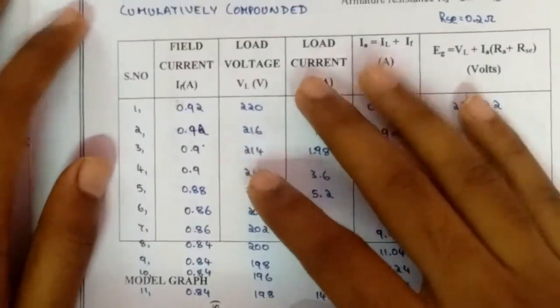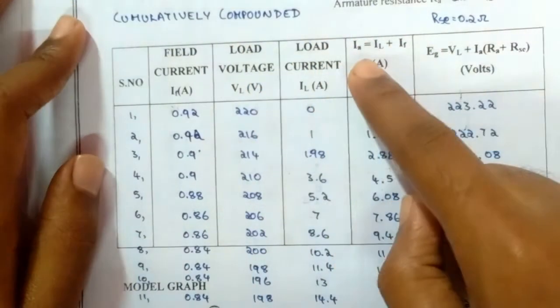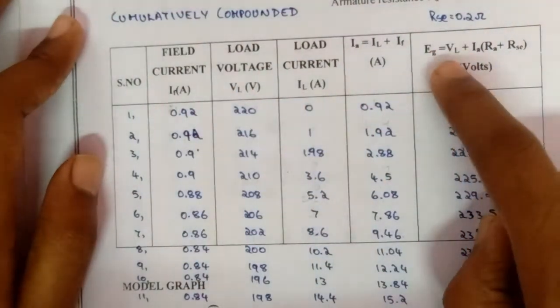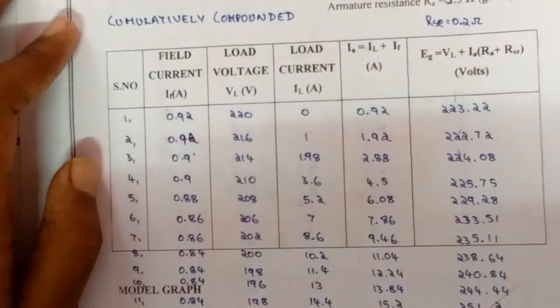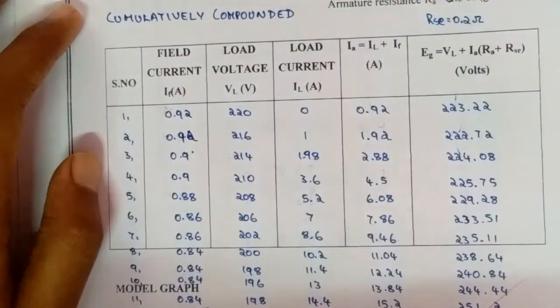The tabular column will be field current, load voltage, load current, and then IA = IL + IF, and EG = VL + IA(RA + RSC). So with these two tabular columns, we should draw a graph.